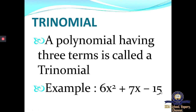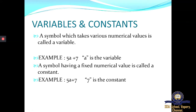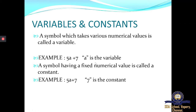We also studied about coefficient and variable. A variable is a symbol which takes various numerical values. For example in 5A plus 7, A is the variable. A constant is a symbol which has a fixed numerical value — in the same example, 7 is a constant. Now 5 over here is the coefficient of A.